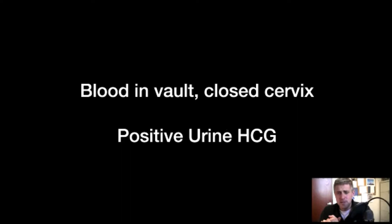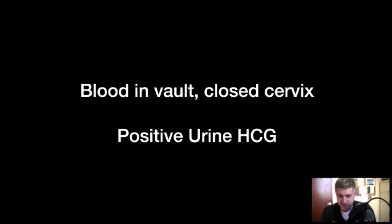On exam there's blood in the vault, and when you do the bimanual, the cervix is closed — so we don't have an obvious miscarriage in process. Blood in vault, cervix closed, and her urine HCG is positive as expected. She took a handful of tests at home, they're all positive. So that's kind of what you're given — what's the next step, what do we need to do for this woman?